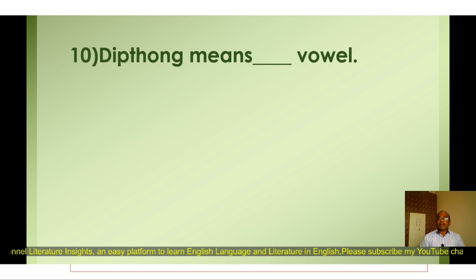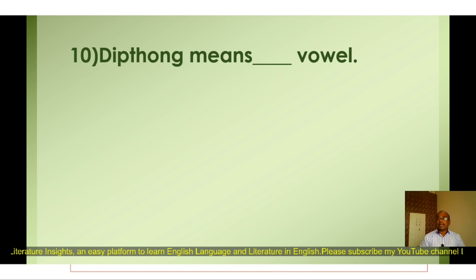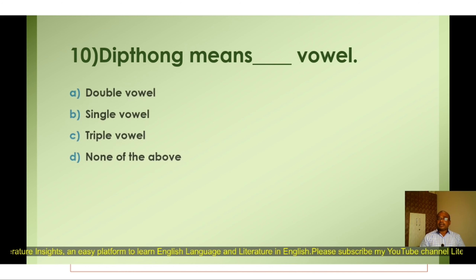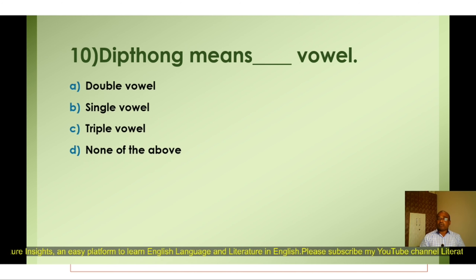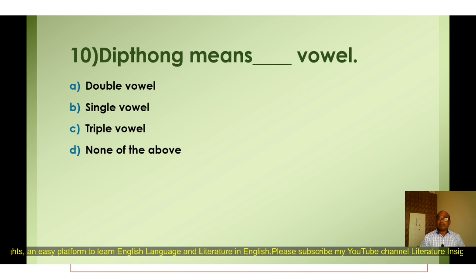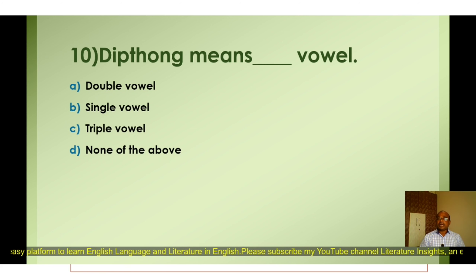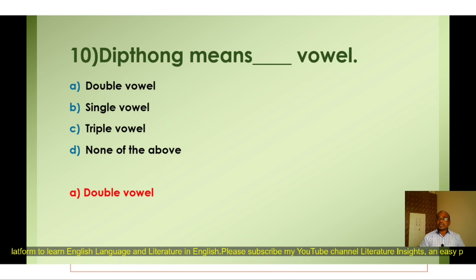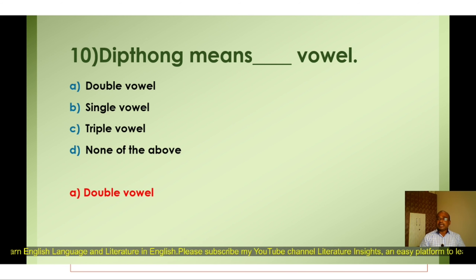Question number ten: Diphthong means — A) Double vowel, B) Single vowel, C) Triple vowel, D) None of the above. The correct option is A) Double vowel. Diphthongs means double vowel.